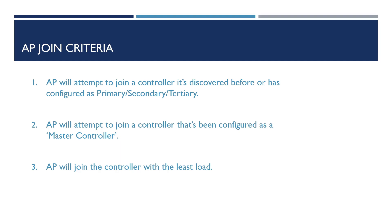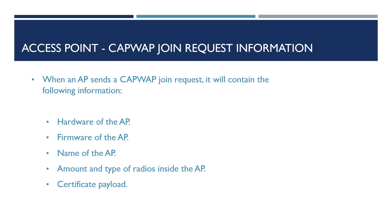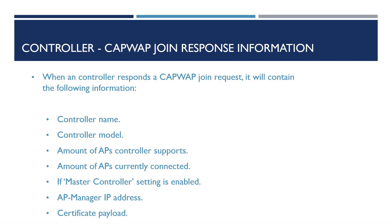Finally, when our AP has found a controller it wants to connect to, it will connect using a CAPWAP join request, then wait for a CAPWAP join response from the wireless controller. When the AP sends a CAPWAP join request, it will contain the following information: the hardware of the AP, the software on the AP, the name of the AP, the number and type of radios inside the AP, and the certificate payload.